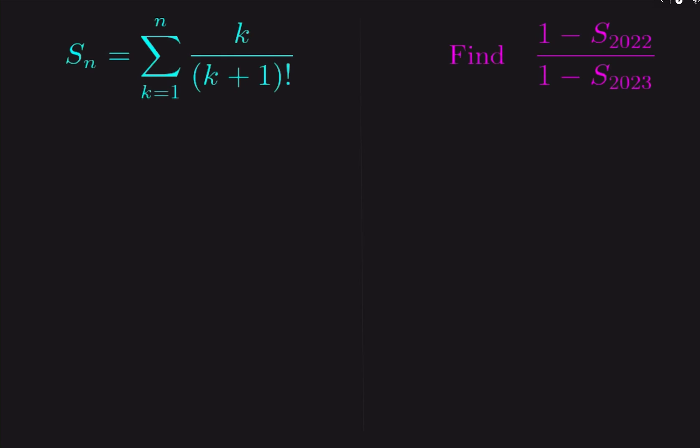S of n is the sum from 1 to n of k over (k+1) factorial. Find (1 minus S of 2022) over (1 minus S of 2023). How can we solve this complex summation problem?